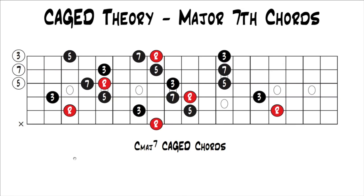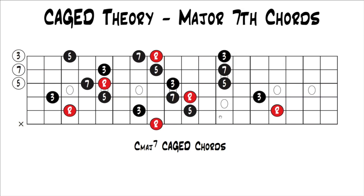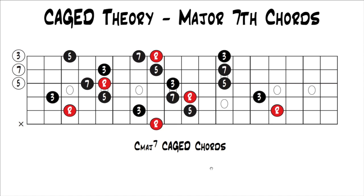Now we can visualize the major 7 chords up and down the whole fretboard. In the key of C, these are all C major 7 chords. Right here is your C major 7 shape, here is your A major 7 shape, here is your G major 7 shape, here is your E major 7 shape, here is your D major 7 shape, and then we're back to C major 7 an octave higher. You can see how all the cage chords can be turned into major 7 chords — that's really useful so that you're not just stuck playing triads. It's really important to be able to play 7 chords as well.